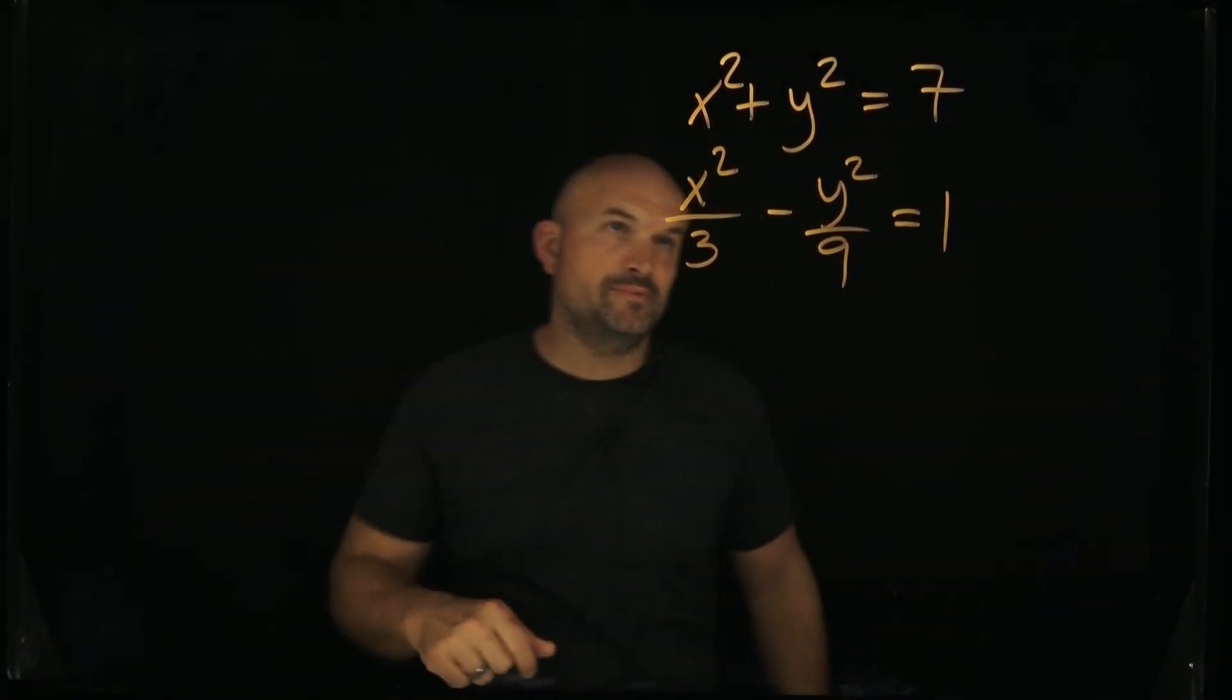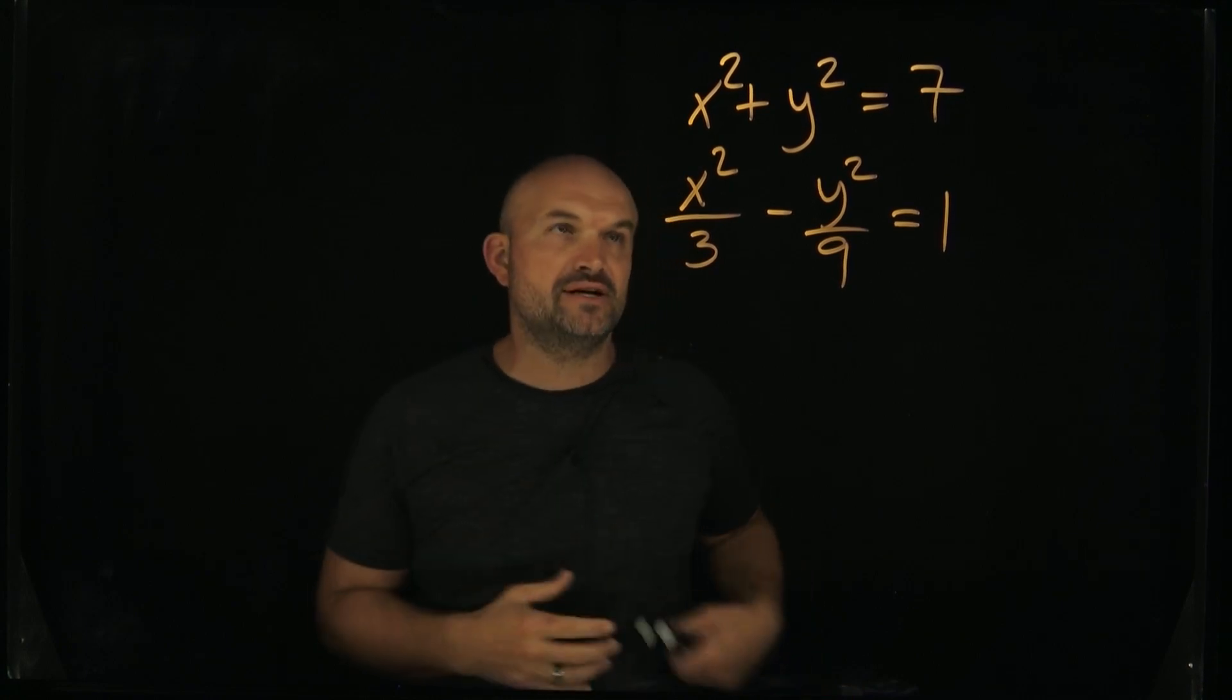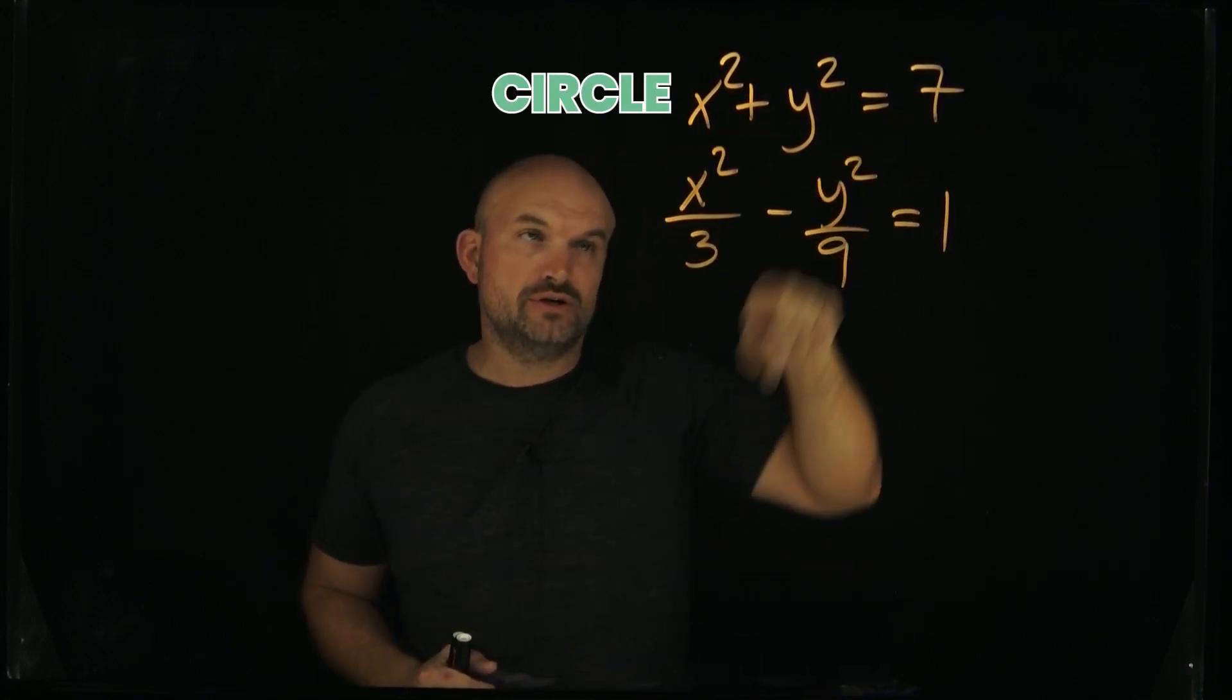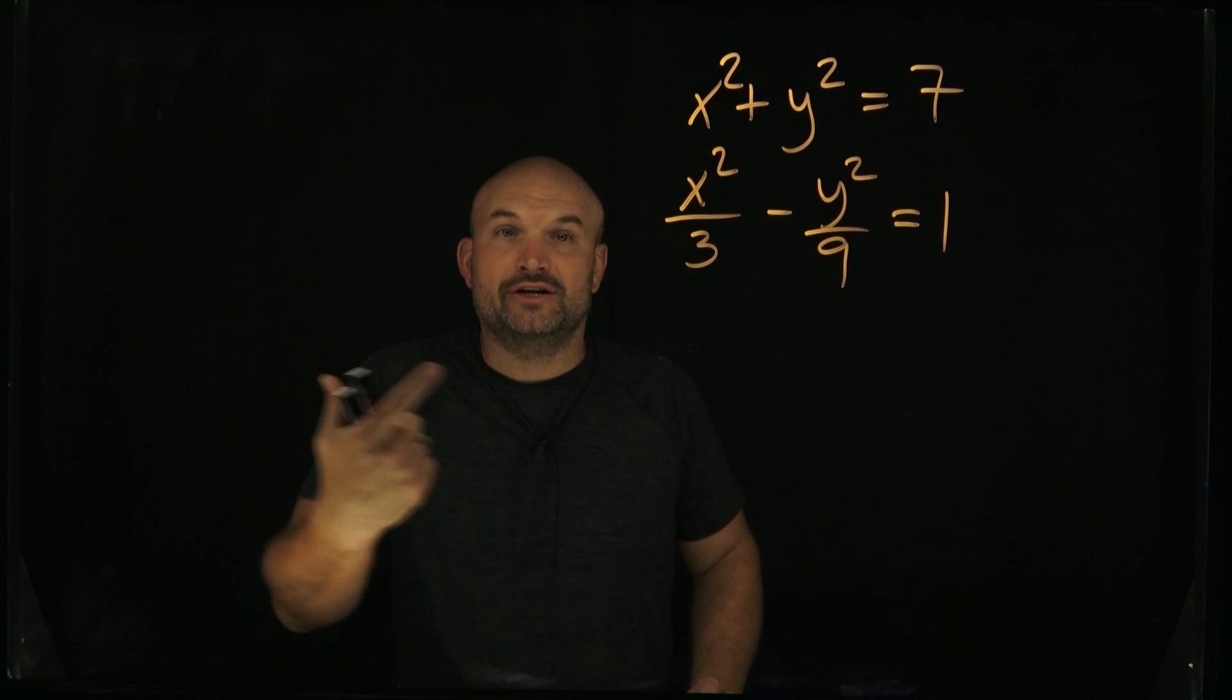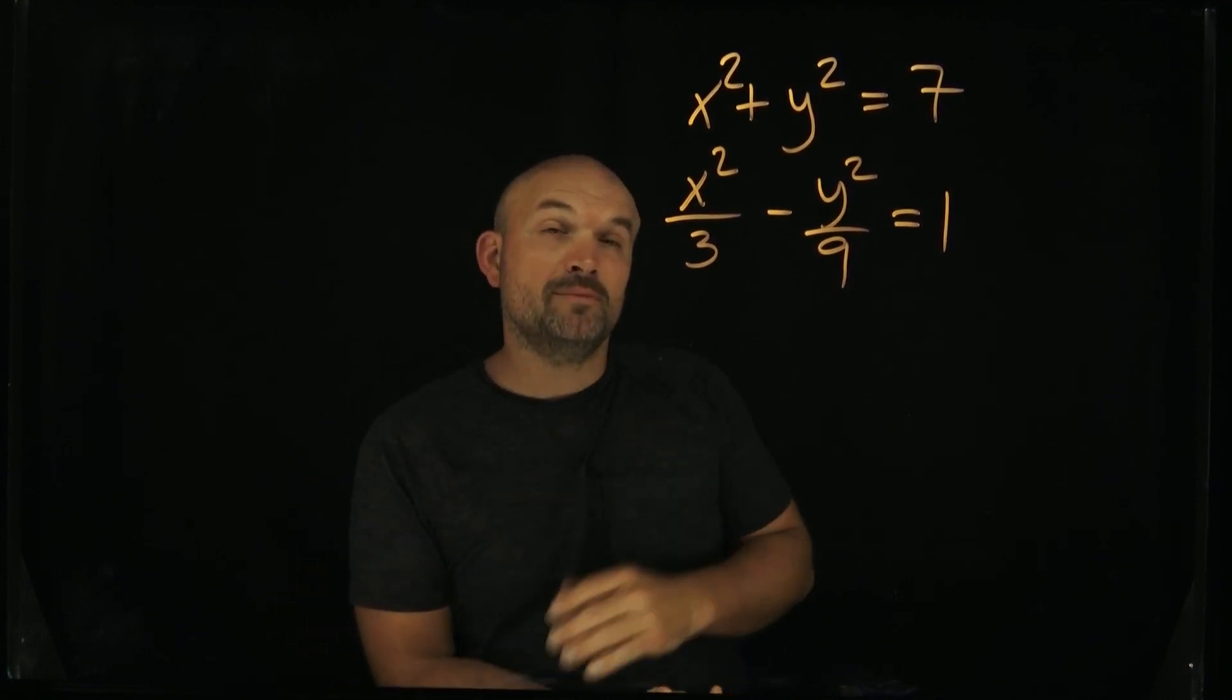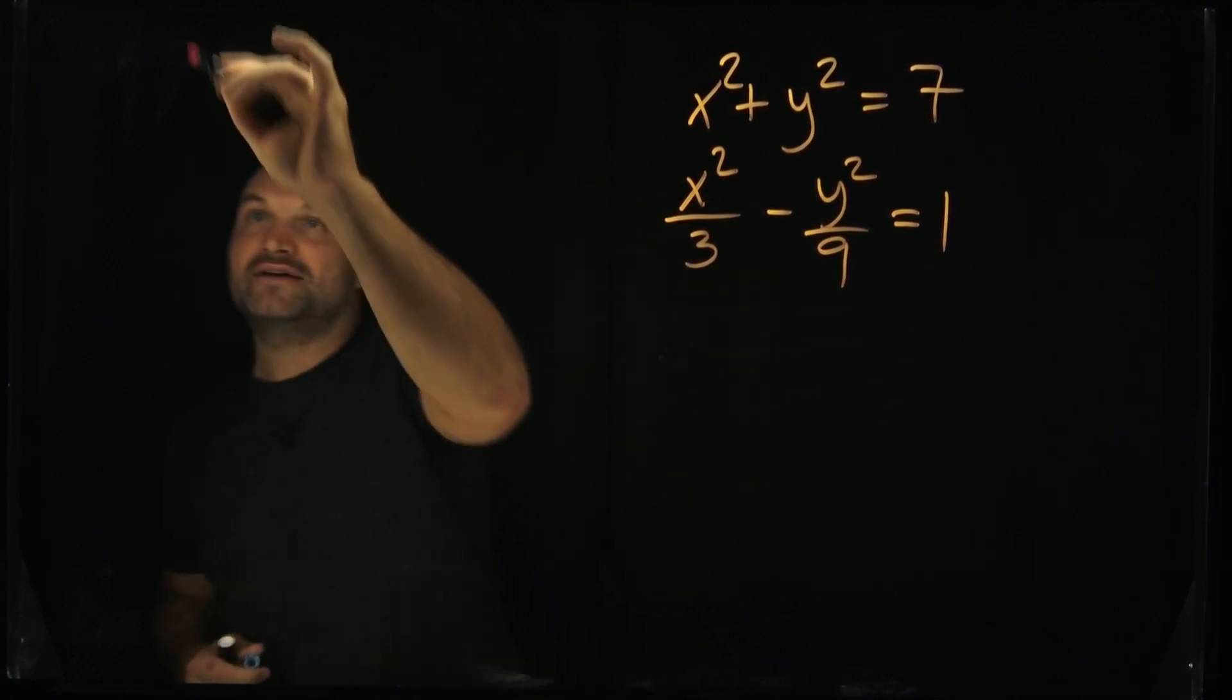All right. So in this example, what we're being asked is where are the intersection points? Hopefully if you have some understanding of conic sections, you recognize that this is the equation of a circle and this is the equation of a hyperbola. They could not intersect at all, they could intersect maybe at one point, two points, or possibly even four points. That's based on my understanding of the shape of these two graphs.